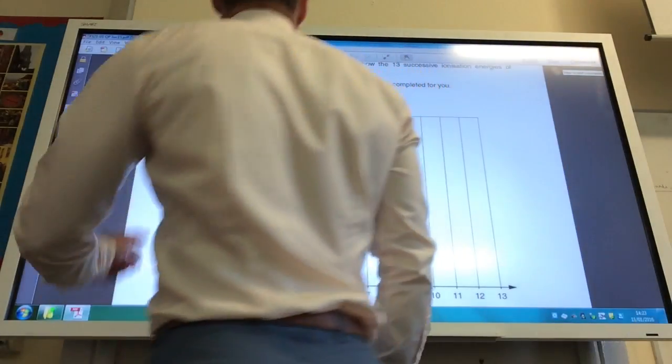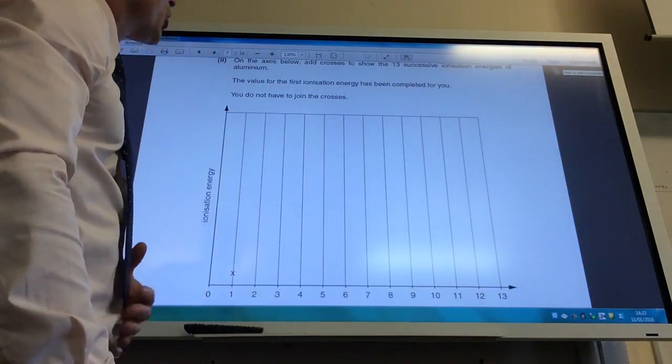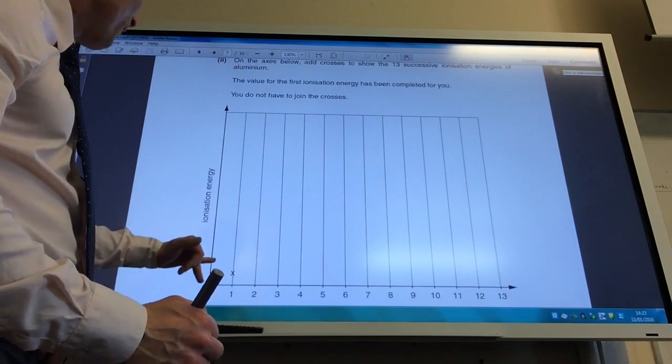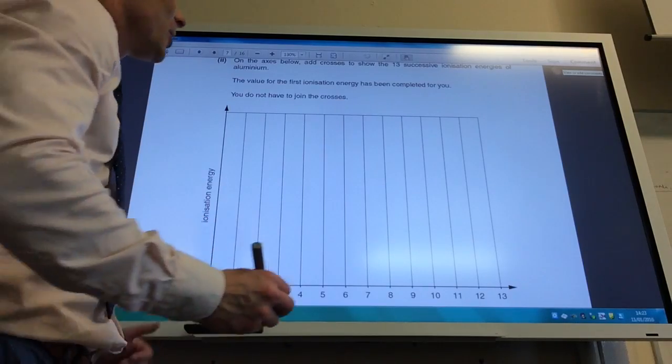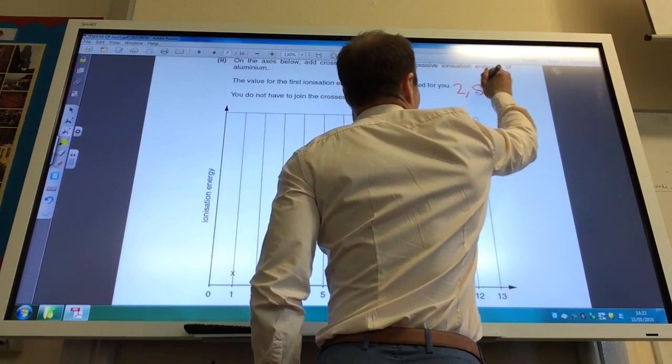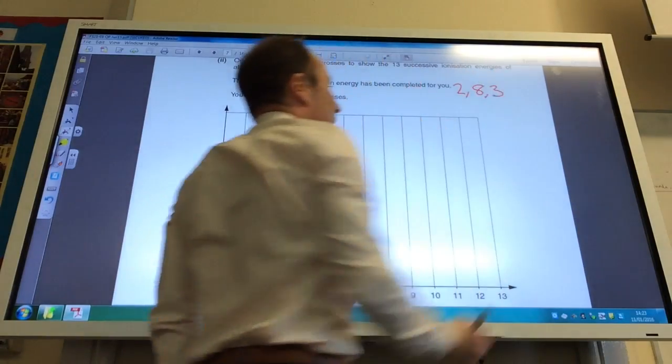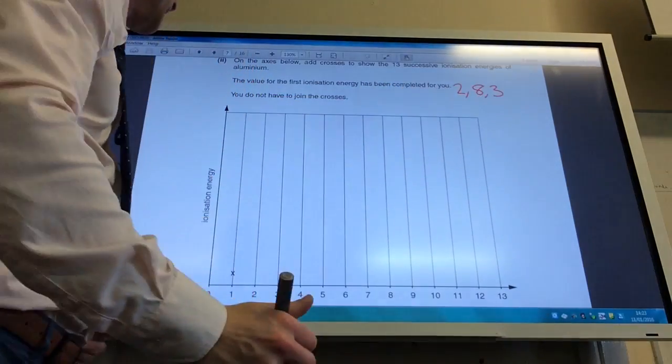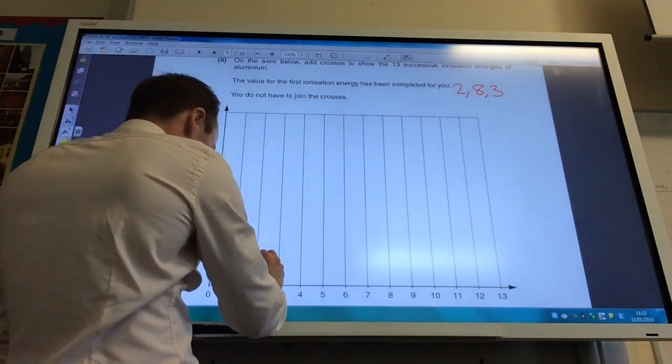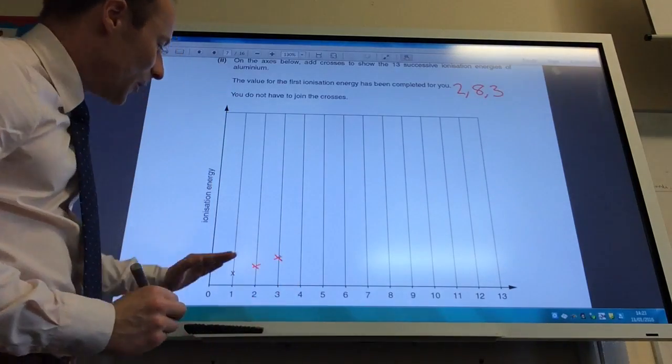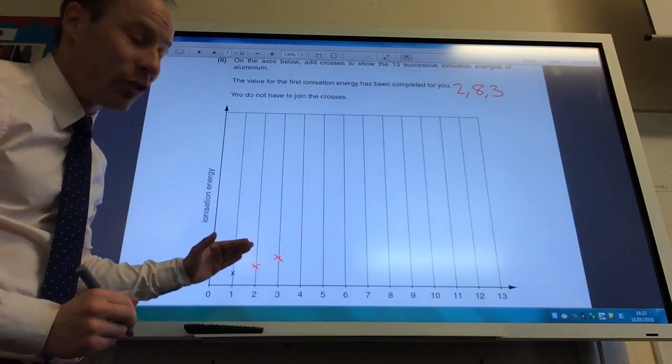Now on the axes below, add crosses to show the 13 successive ionisation energies of aluminium. The value for the first ionisation energy is completed. So remember, aluminium is going to have the electron configuration 2, 8, 3. Remember it's in group 3, those are my 13 electrons. First one done for me, so the first 3 are all in the same shell. So it's just a progressive increase, nothing dramatic.